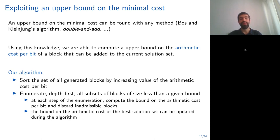Using this knowledge, at each step of the exhaustive enumeration, we are able to compute an upper bound on the arithmetic cost per bit of a block that can be added to the current set if we want to obtain a solution with a smaller cost. Now we can describe our algorithm. First, we sort the set of all generated blocks by increasing value of the arithmetic cost per bit. Then we enumerate depth first all subsets of blocks of size less than a given bound. At each step, we use the upper bound on the arithmetic cost per bit to discard inadmissible blocks. The bound on the arithmetic cost of the best solution can be updated throughout the algorithm.